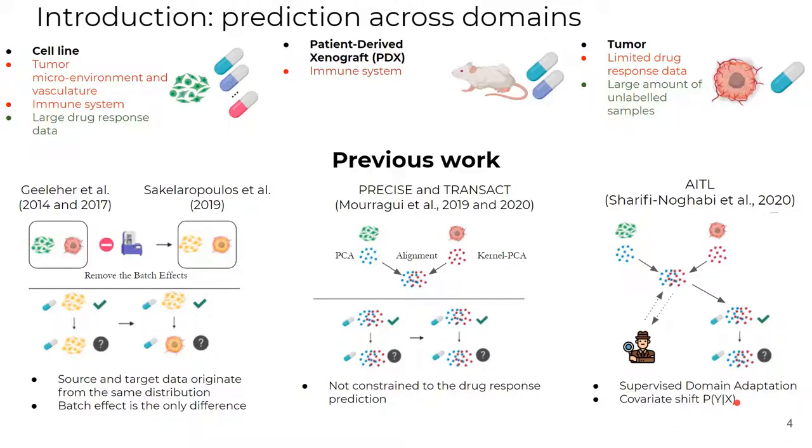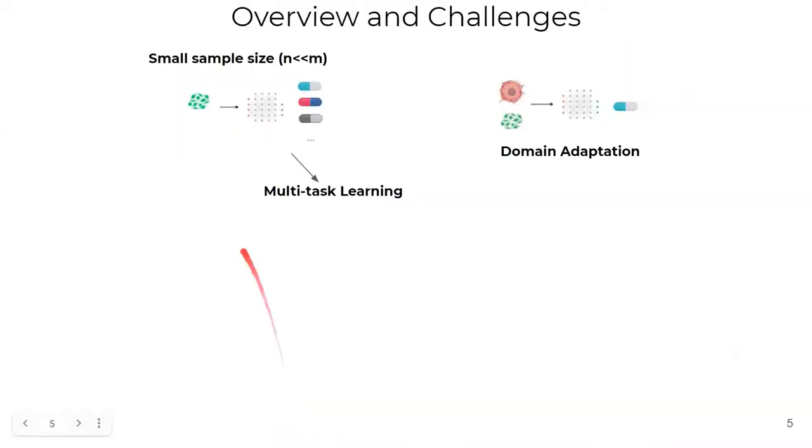AITL uses the already limited labeled patient data in a supervised domain adaptation manner. Besides, relying on the covariate-shift assumption, which we'll discuss later might be a strong assumption. We can also say that all of these previous works are single-drug models. To summarize, we have the best of two worlds.